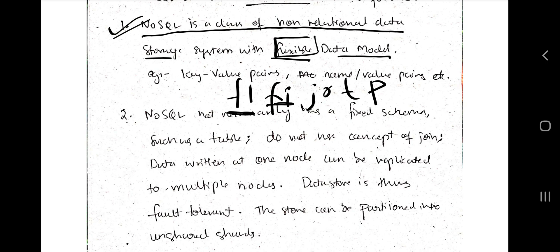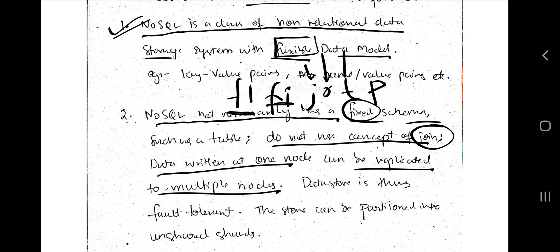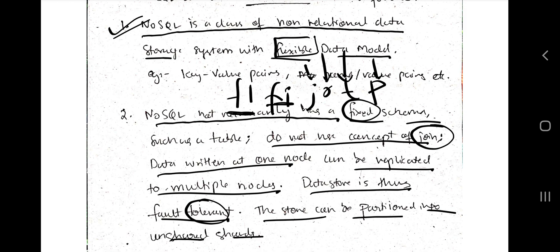FI means it does not have a fixed schema. J stands for joins — NoSQL does not use the concept of joins, which means joining two tables, that concept is absent here. R means data at one node can be replicated to multiple nodes. T means it is fault tolerant. And P means the data can be partitioned into unshared shards — this will be discussed in detail in upcoming topics. So the mnemonic is: Fluffy Jr. thanked the police.